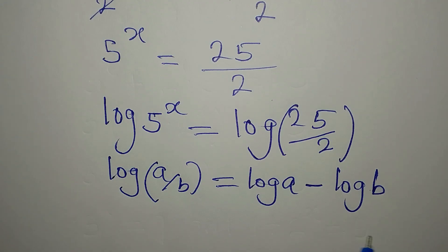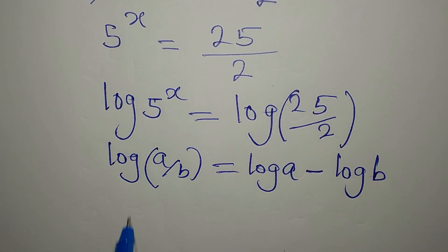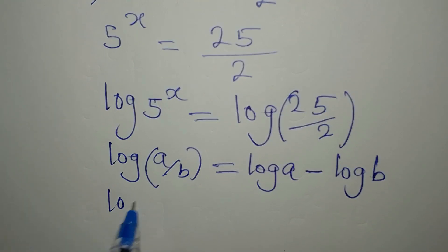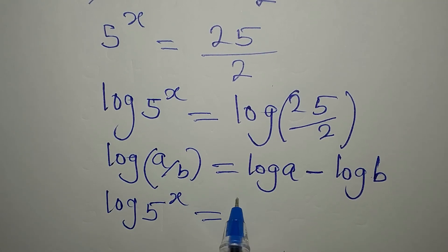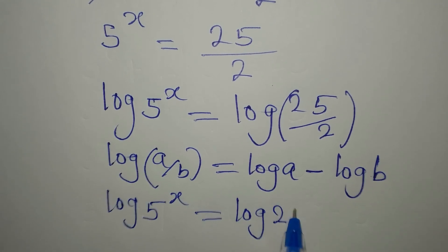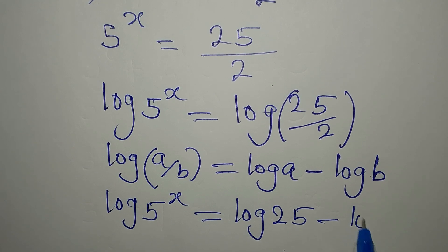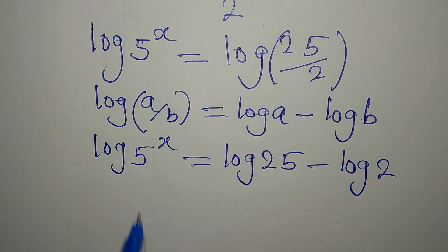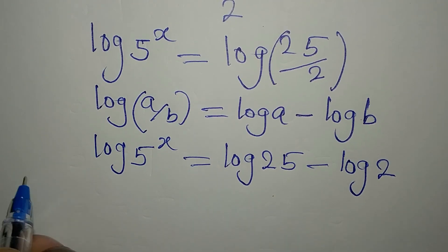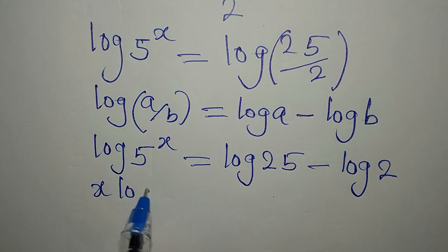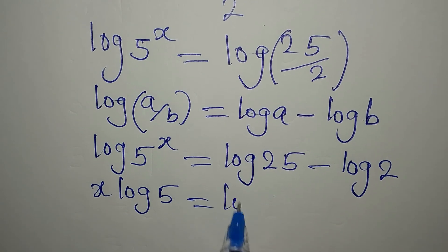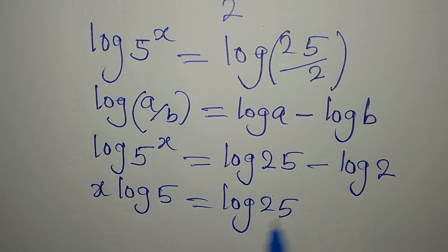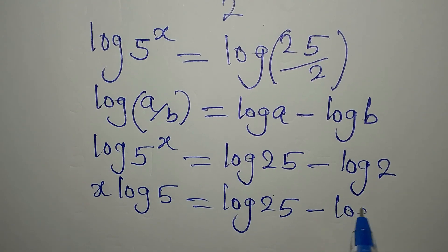Let's apply this: we're going to have log 5 to the power of x equals log 25 minus log of 2. The power goes in front, so we have x log 5 equals log 25 minus log 2.